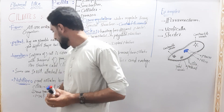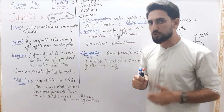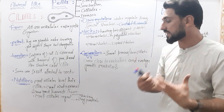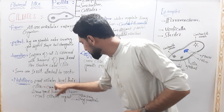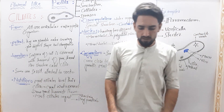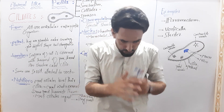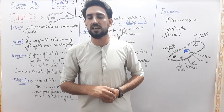Next is nutrition. When we talk about nutrition of the ciliates, we use the cilia to bring food toward the cell. The cilia create water currents to direct food particles toward the cell.